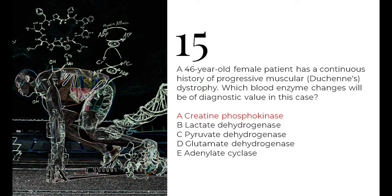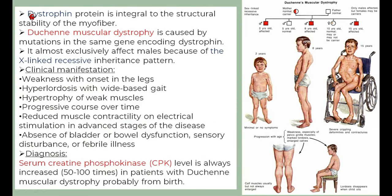Question 15: a 46-year-old female with progressive Duchenne's muscular dystrophy — which enzyme has diagnostic value? Duchenne's dystrophy is caused by a mutation in the gene encoding dystrophin, a protein critical for structural stability of muscle fibers. It is an X-linked recessive disorder, mostly manifested in males. Symptoms include leg weakness, hyperlordosis, hypertrophy of weak muscles, and progressive course over time.